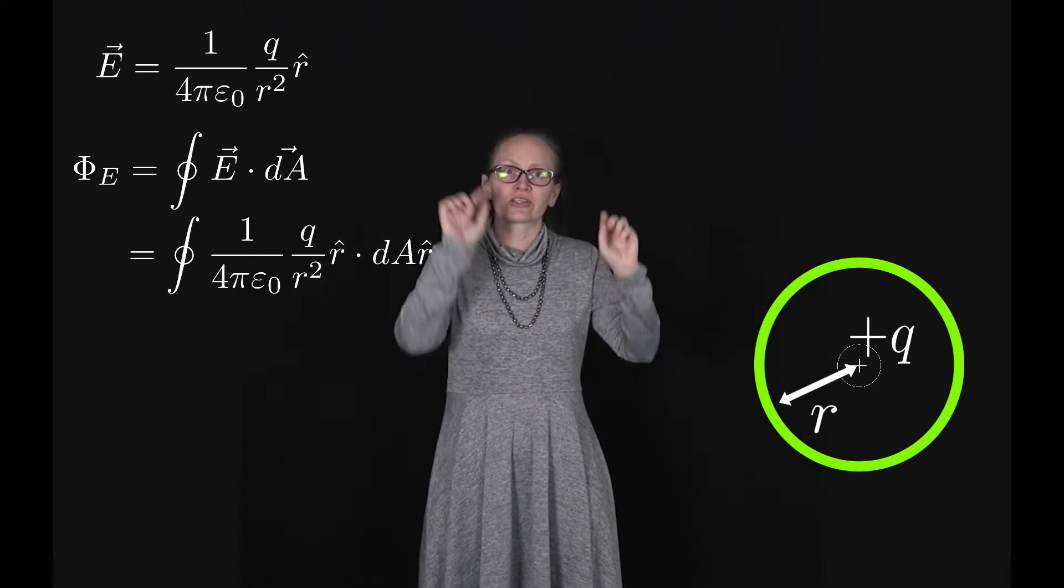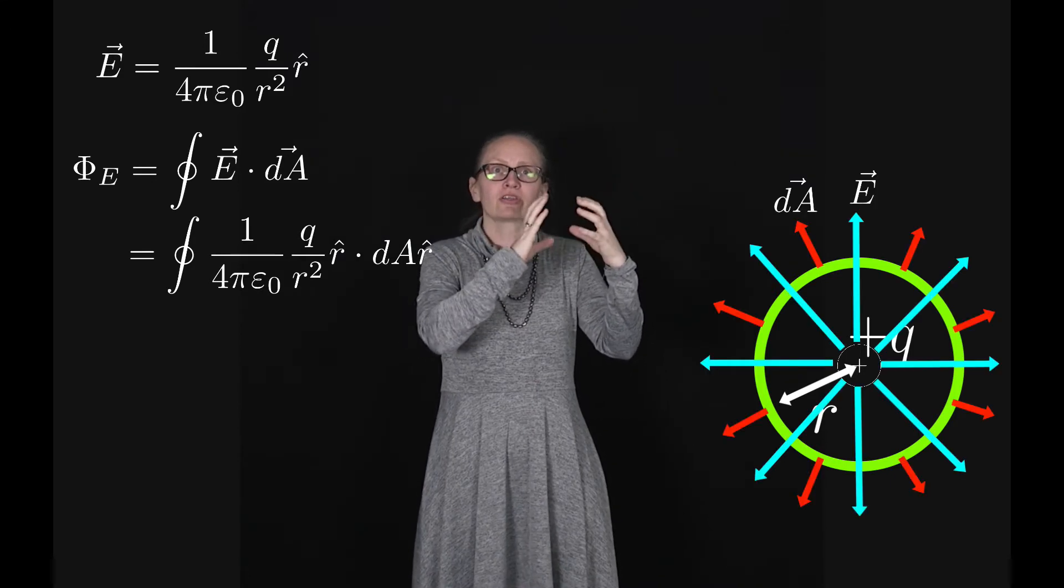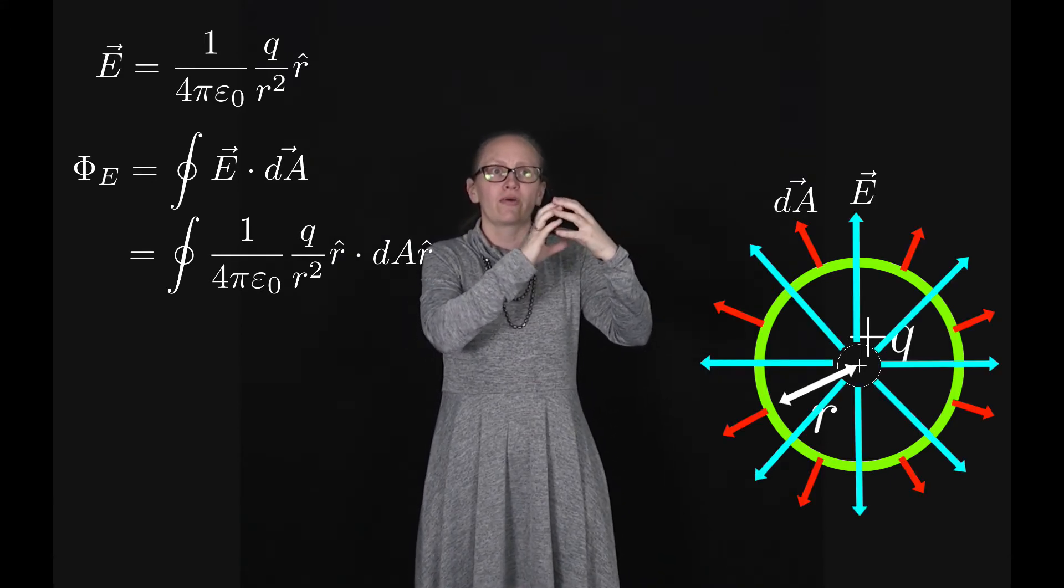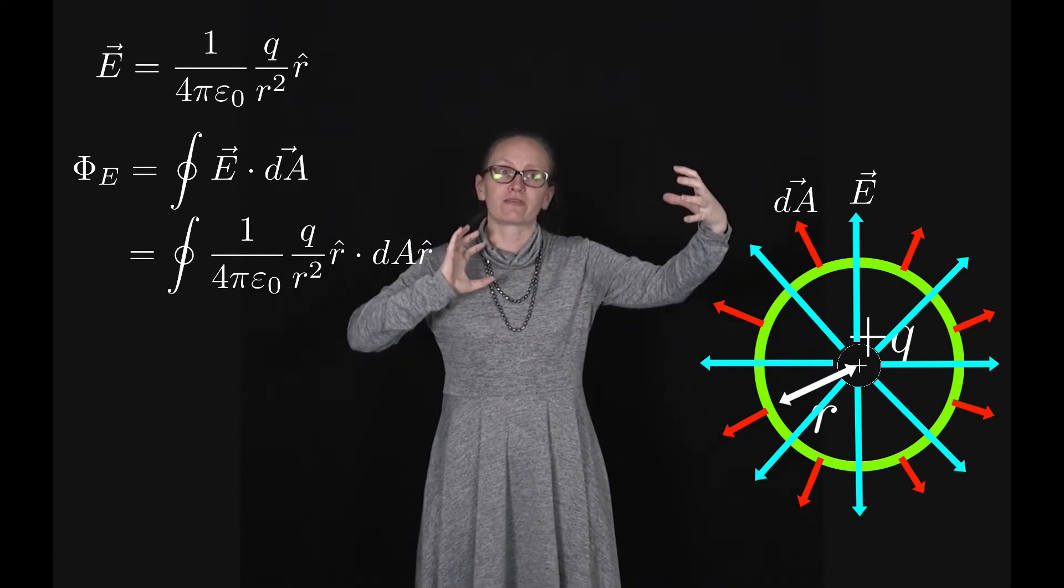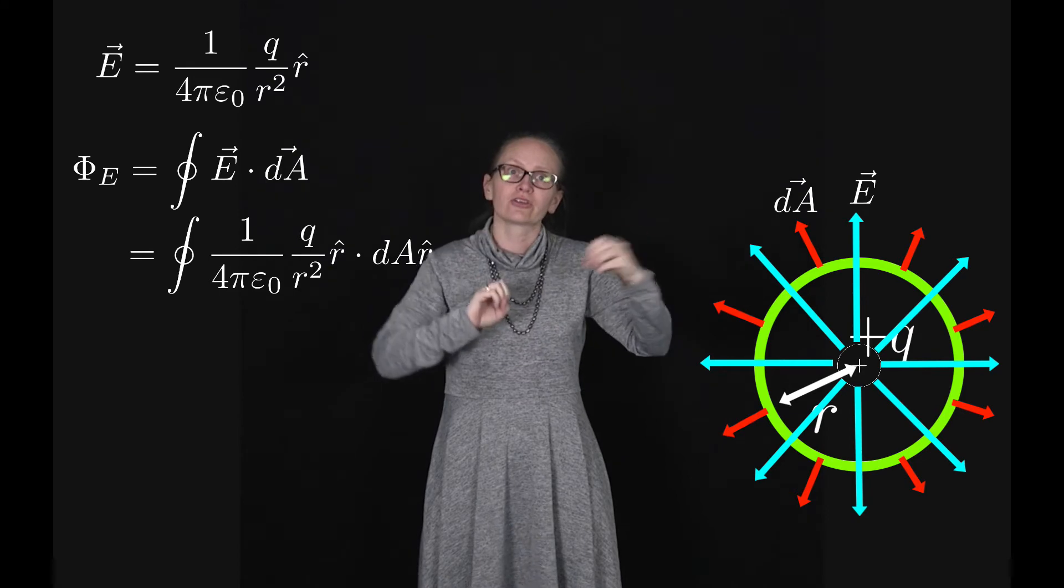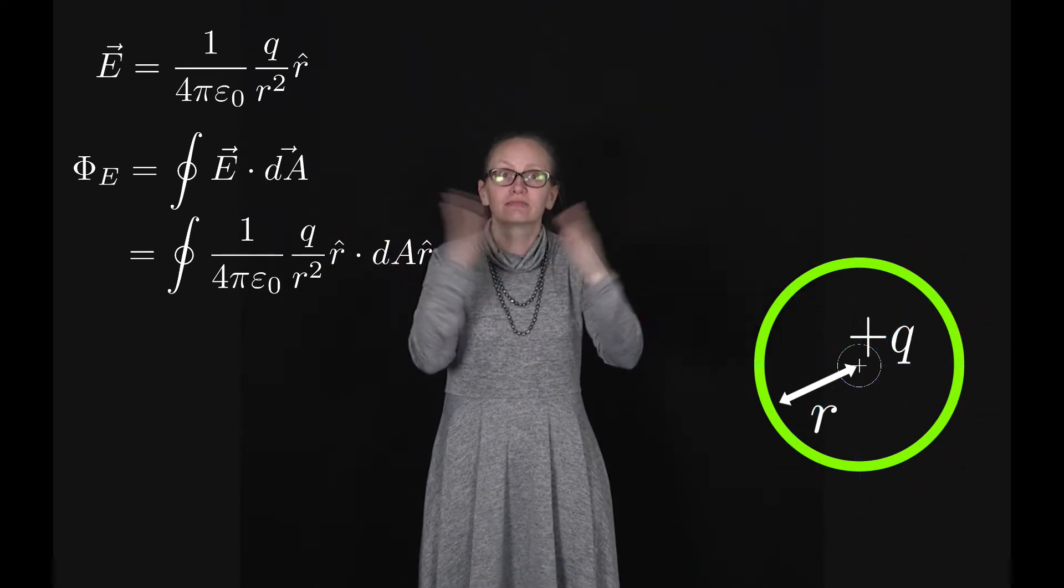In this case the dot product has disappeared because the electric field is going out from that positive charge and dA is always out from the surface. So these two are always parallel to each other, so that dot product disappears.